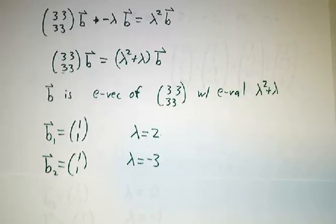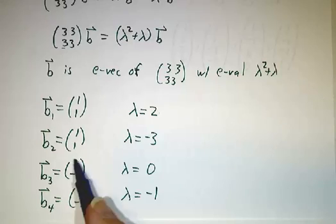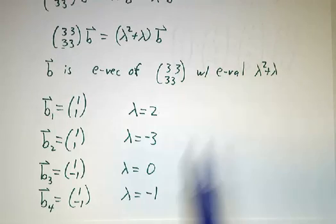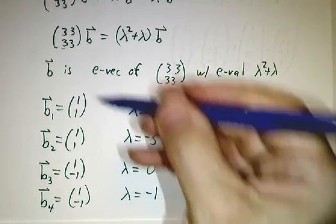And with these eigenvectors, this is 0, and you have λ squared plus λ is 0, so λ is either 0 or negative 1. So those are our four solutions. We can put them together.